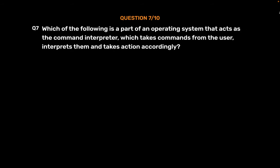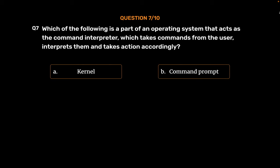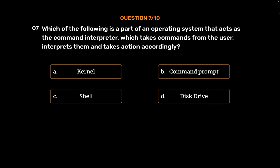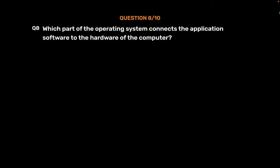Question No. 7. Which of the following is a part of an operating system that acts as the command interpreter, which takes commands from the user, interprets them and takes action accordingly? Option A: Kernel. Option B: Command Prompt. Option C: Shell. Option D: Disk Drive. The correct answer is Option C: Shell.